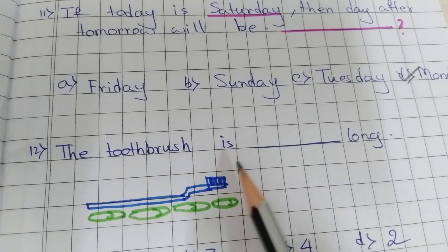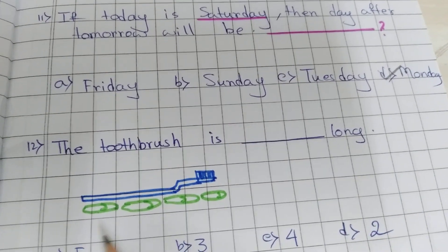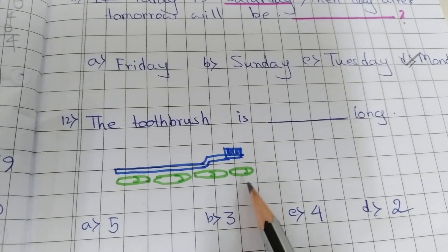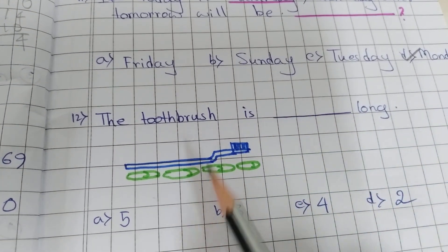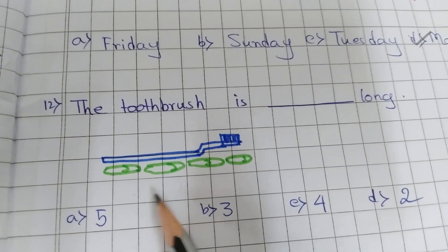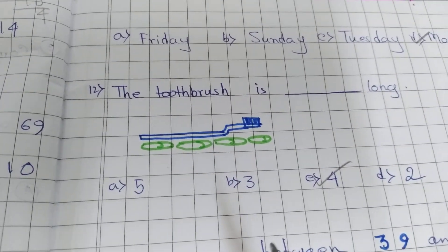The toothbrush is dash long. How many units are long? 1, 2, 3, 4. If I go ahead and say blocks, I will tell you how many units are long. 1, 2, 3, 4. So option C is correct.